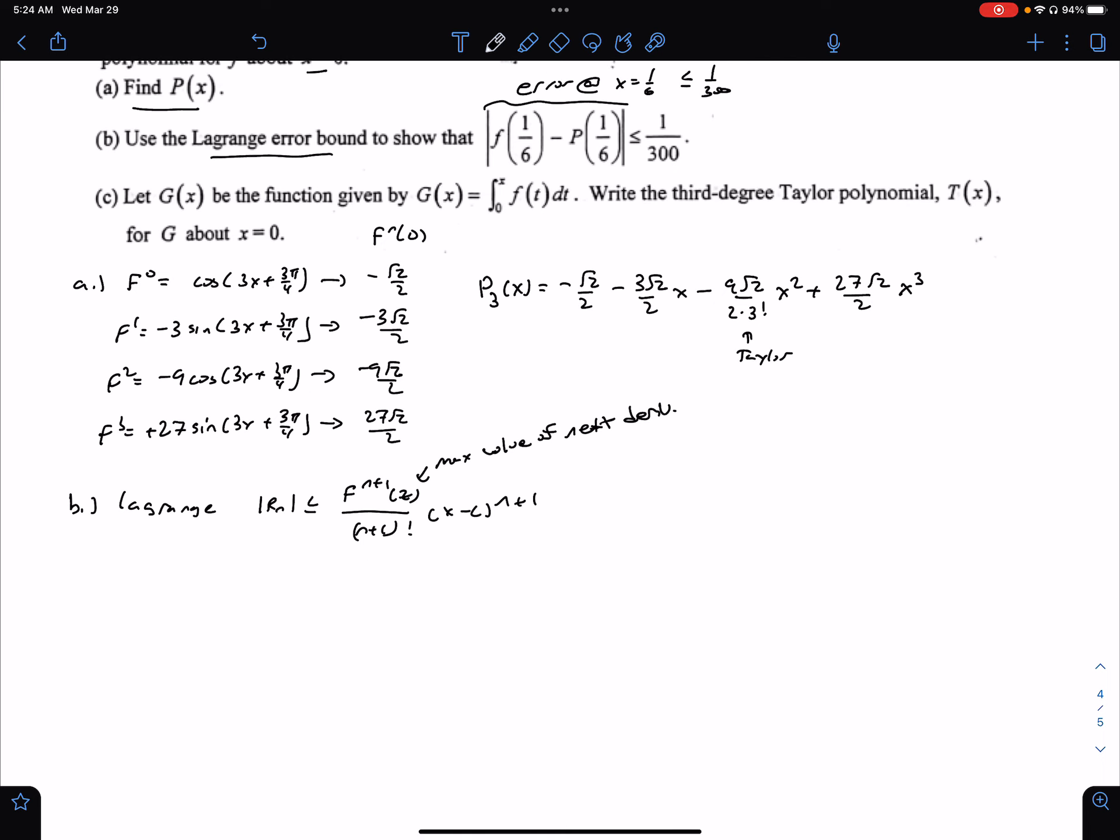So what we have to do, we have to find out what's the maximum value of the nth derivative. Well, we already found our third derivative, so we need the fourth derivative, which is not too bad to do. What is 3 times 27? That's just 81. Cosine(3x + 3π/4).